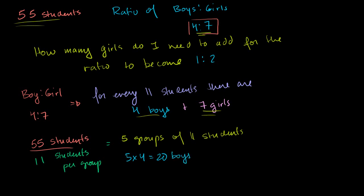And we have 5 times 7. We have 5 groups, 5 times 7, each group has 7 girls, of girls. So that's equal to 35 girls. And the numbers add up. 20 plus 35 is 55. And 20 to 35 is equal to 4 to 7. So it all works out.